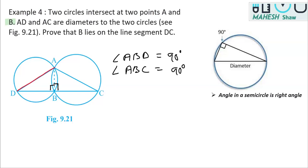Now, if I add these two angles, what do we get? Angle ABD plus angle ABC is equal to 90 plus 90. If I club these two angles together, we are getting angle DBC.